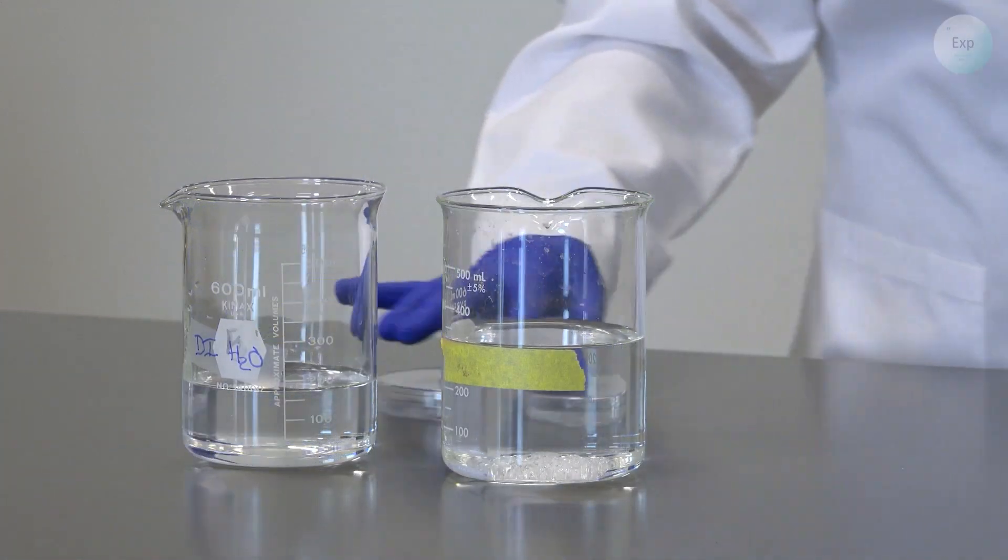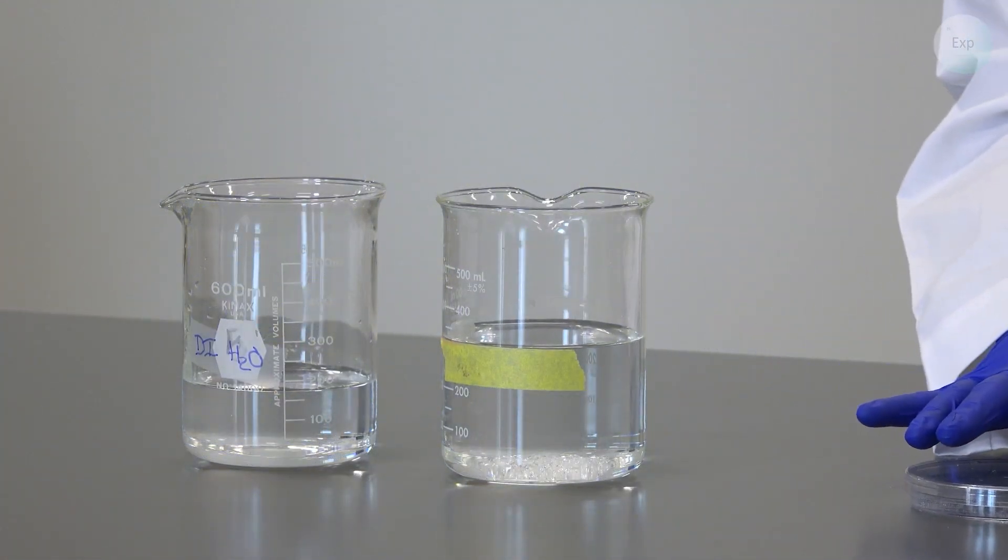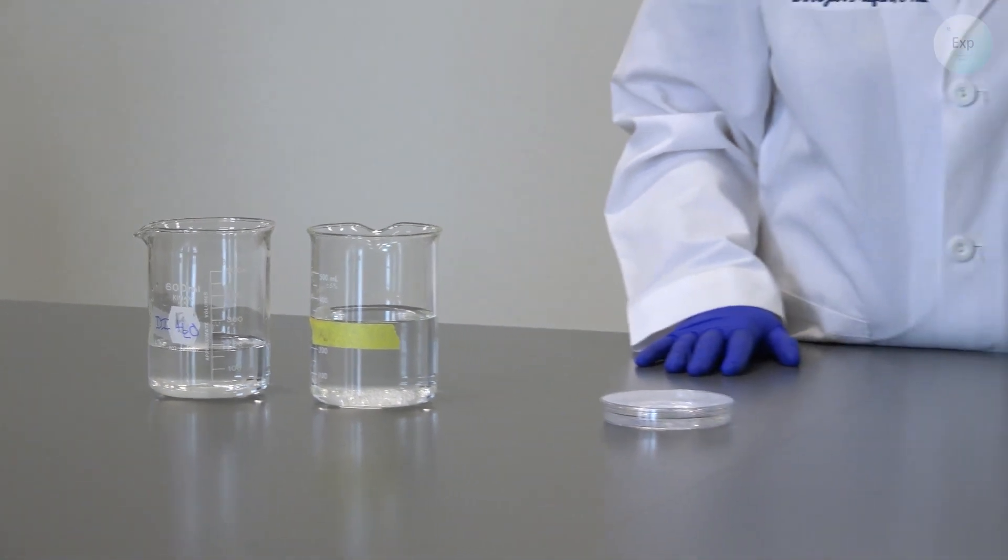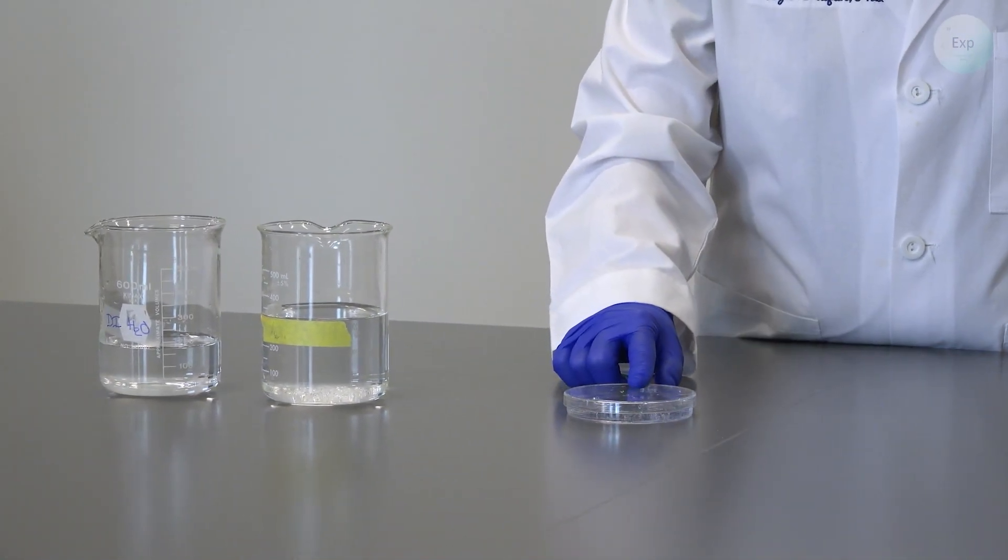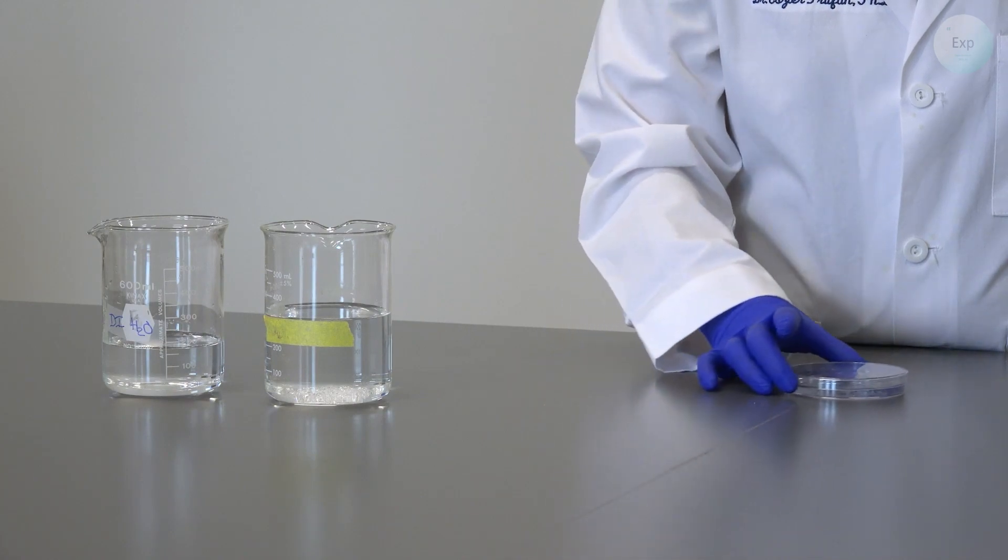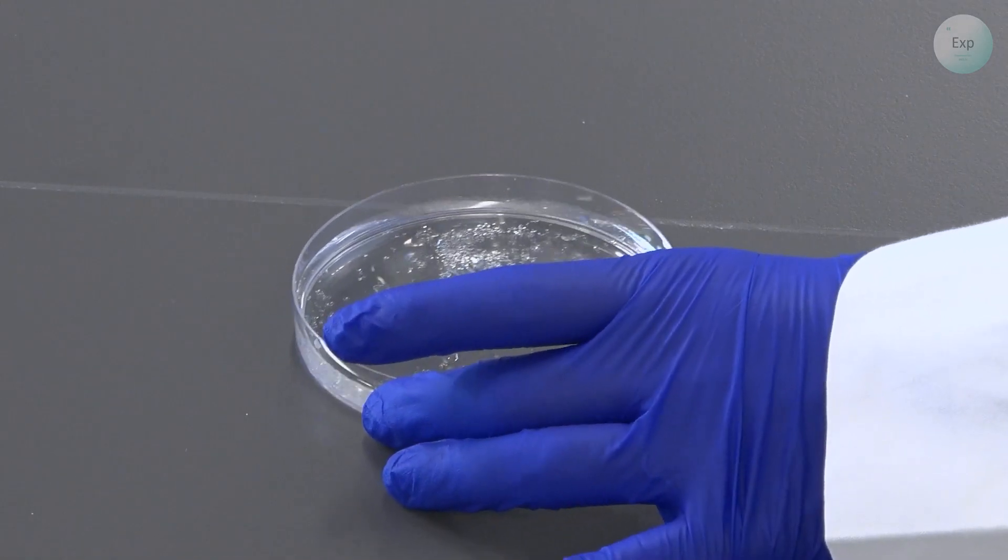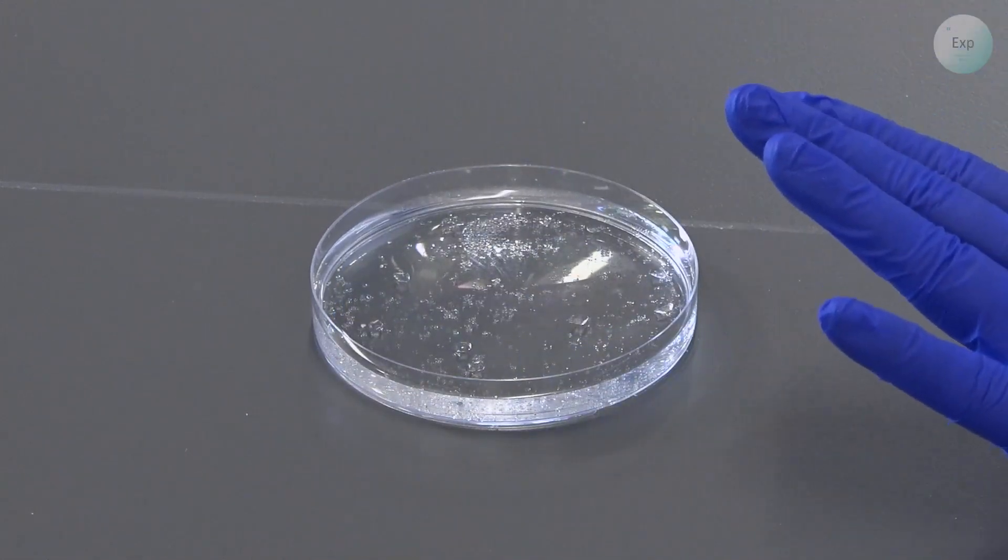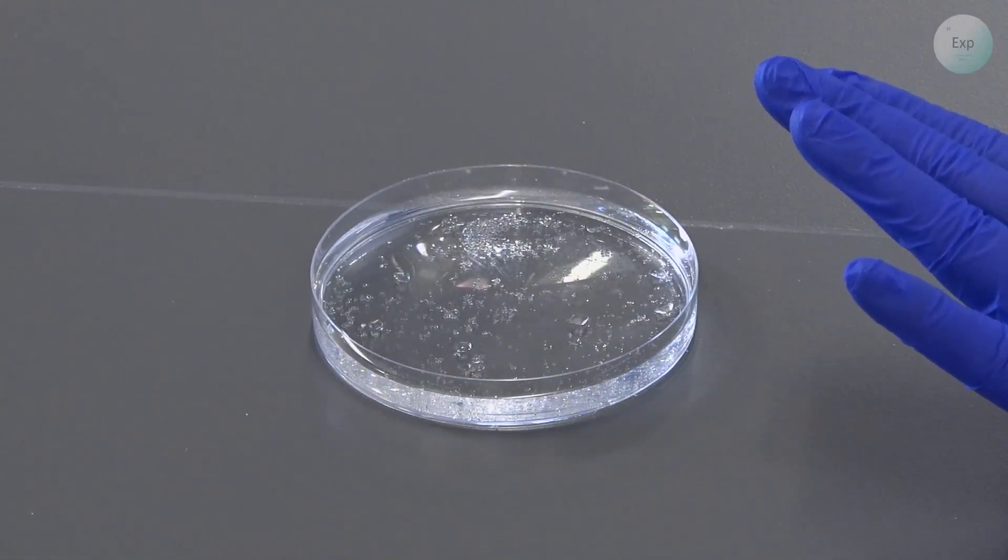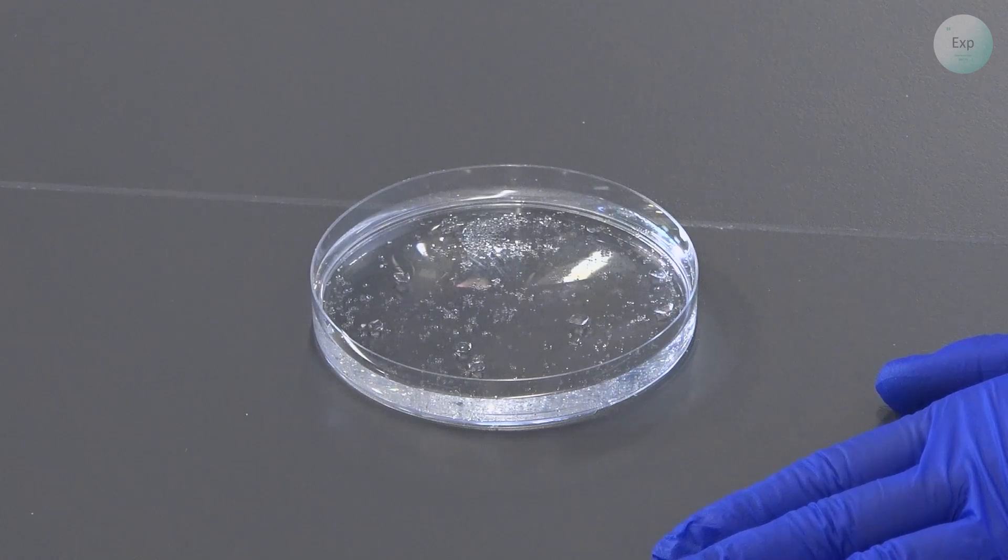Then, that petri dish that contains my original grow solution is now in a far more advanced stage of crystal growth. In this one, I can see that there are small crystals and large crystals forming. I want to carefully select the large crystals so that they may grow even larger in the coming days.